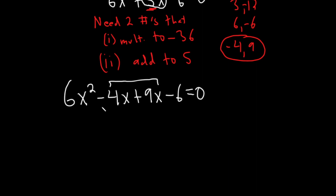Now we just pull out a common factor from here. So it looks like we can pull out a 2x. And this will leave us with 3x. Right? 2x times 3x is 6x squared minus 2. Right? Because 2x times negative 2 is negative 4x. Here we can pull out a 3. And again, this will leave us with, let's see, 3 times what is 9x, 3x. 3 times what is negative 6, negative 2. Beautiful.